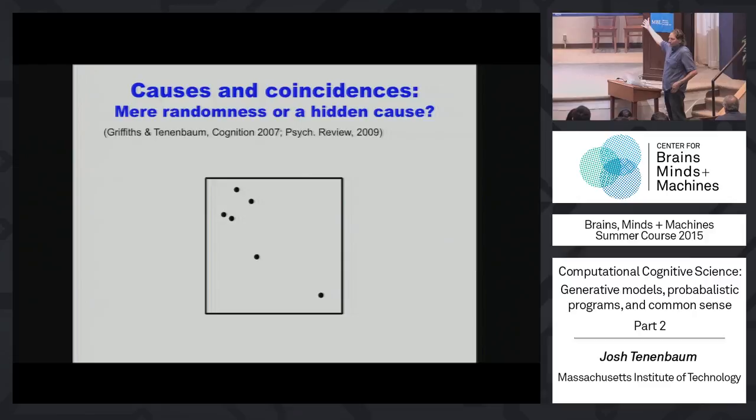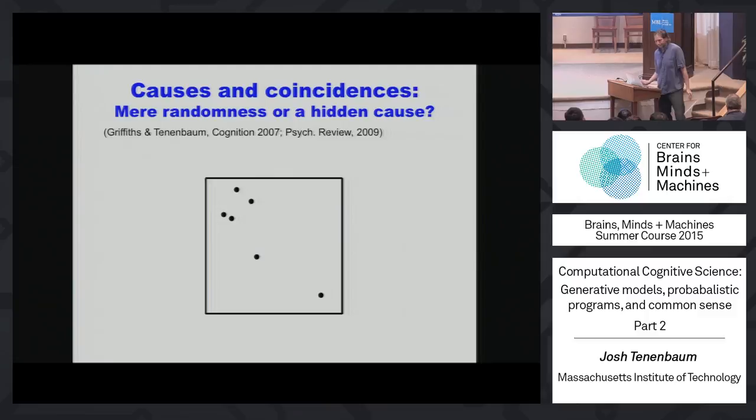On a scale of 0 to 10 — where 10 means you're sure there's some special hidden cause in some part of this map, and 0 means you're quite sure there's nothing going on, it's just random — what does this give as evidence for a hidden cause? I heard answers of 5, 2, and 7. That's exactly what people do — you could do the same thing on Mechanical Turk and get ten times as much data, and it would be the same.